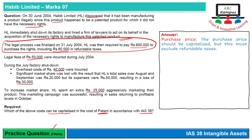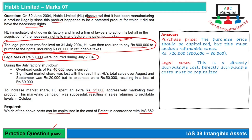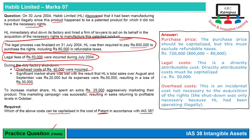The capitalized cost of the patent comprises: purchase price of Rs. 800,000 less refundable taxes of Rs. 80,000 = Rs. 720,000; plus legal fees of Rs. 50,000 as a directly attributable cost. These are the only two amounts to be capitalized. The overhead costs of Rs. 40,000 are not capitalized because the factory shutdown was only necessary due to the previous illegal operations — this is an incidental cost, not necessary to the acquisition of the rights.